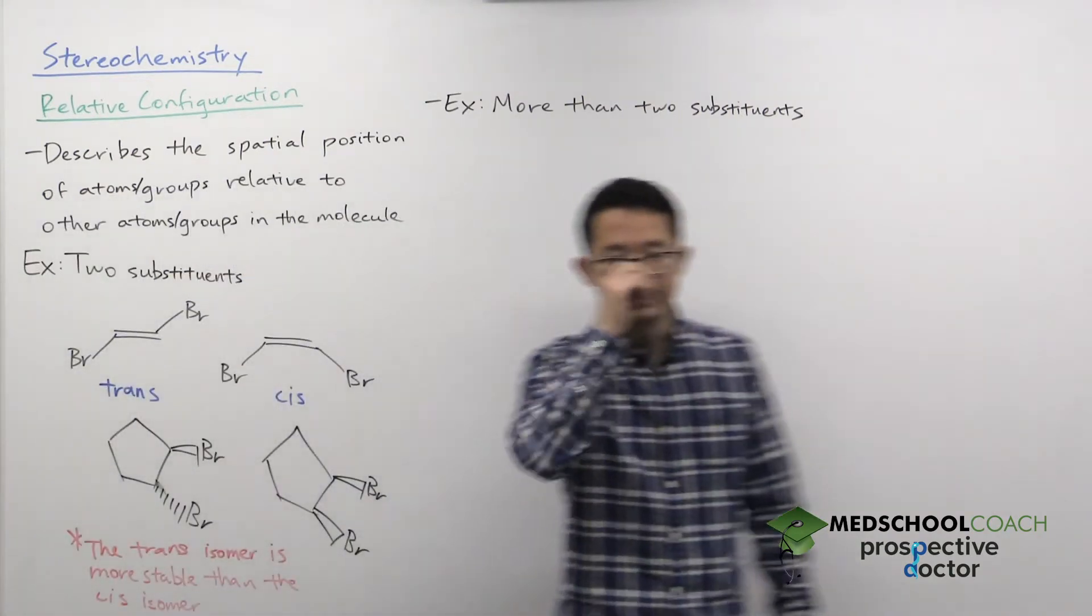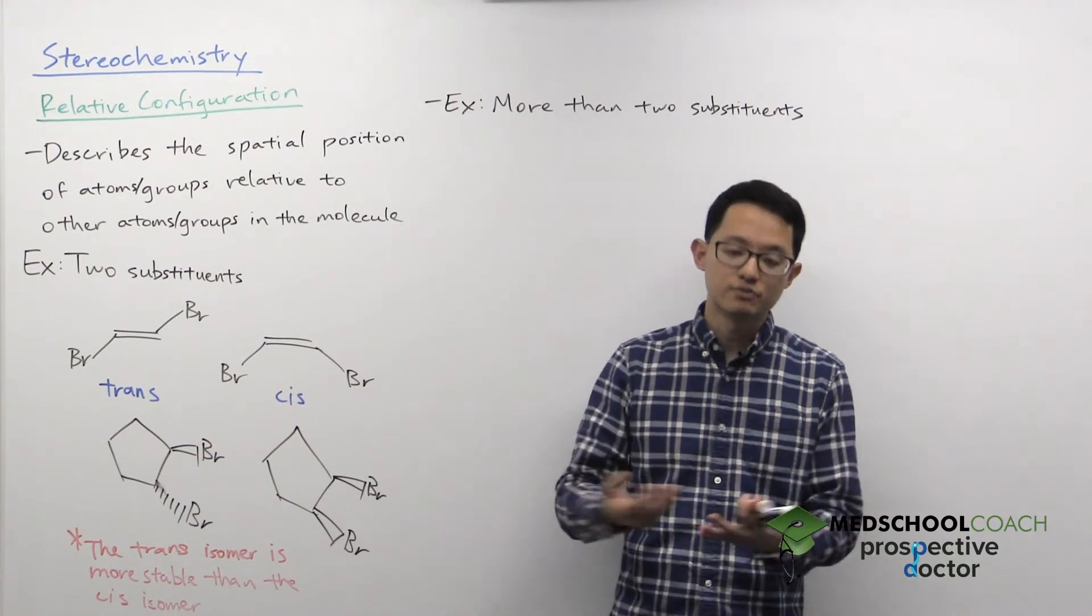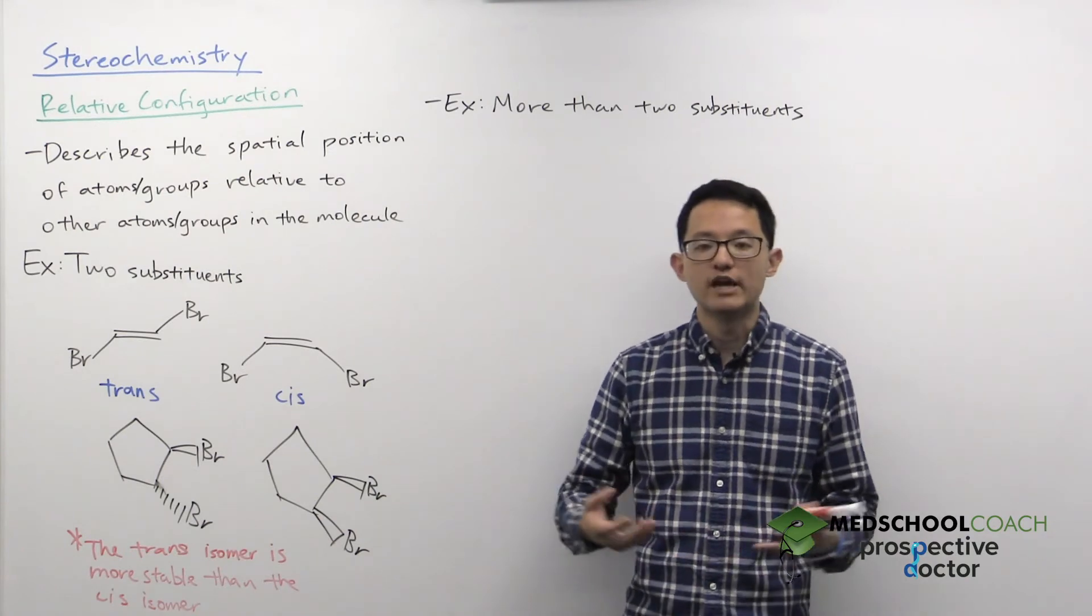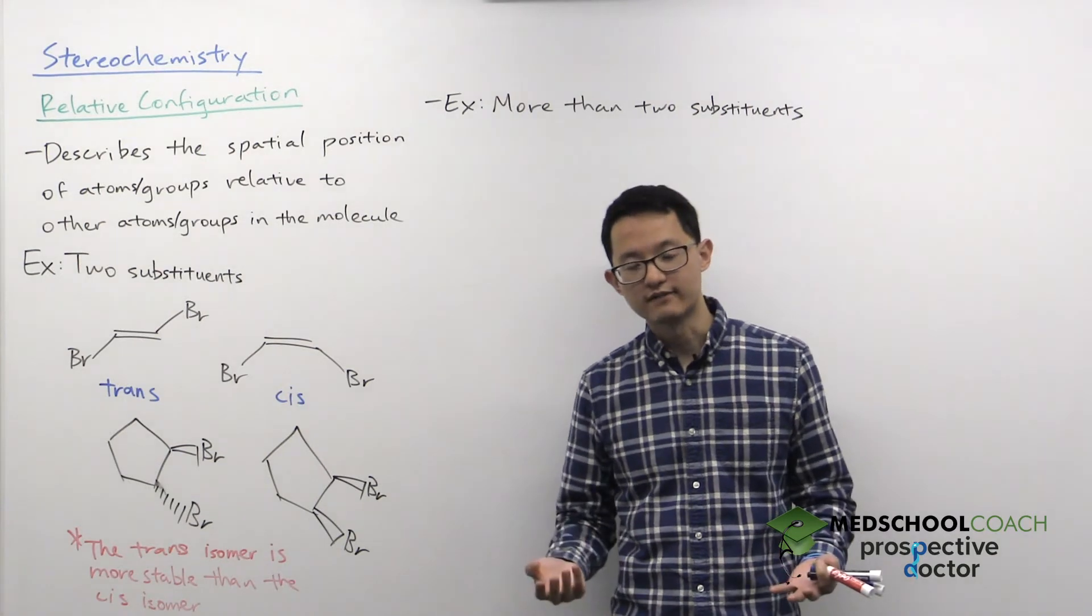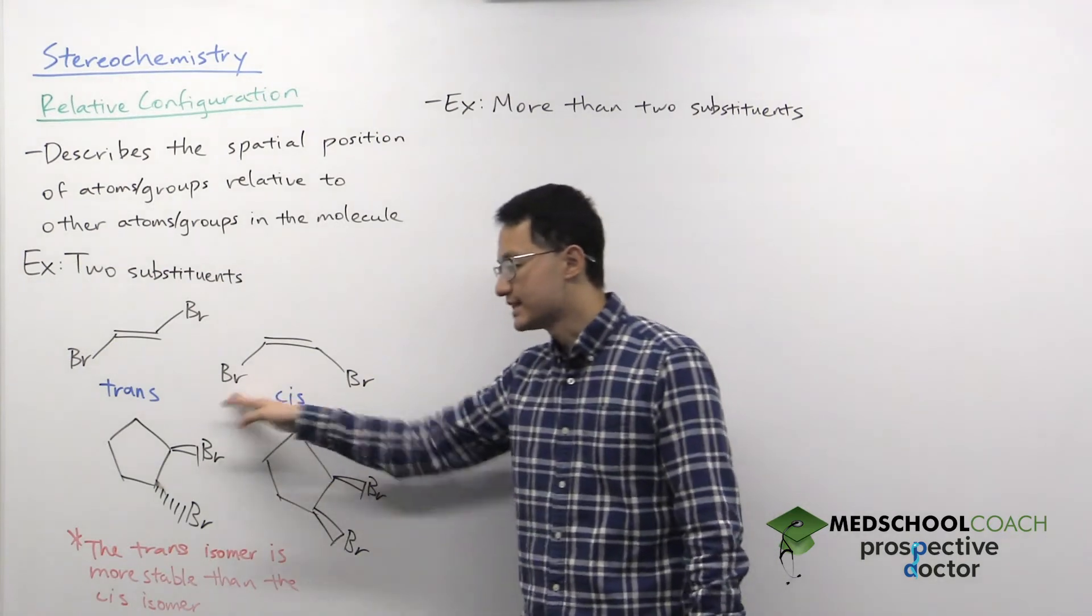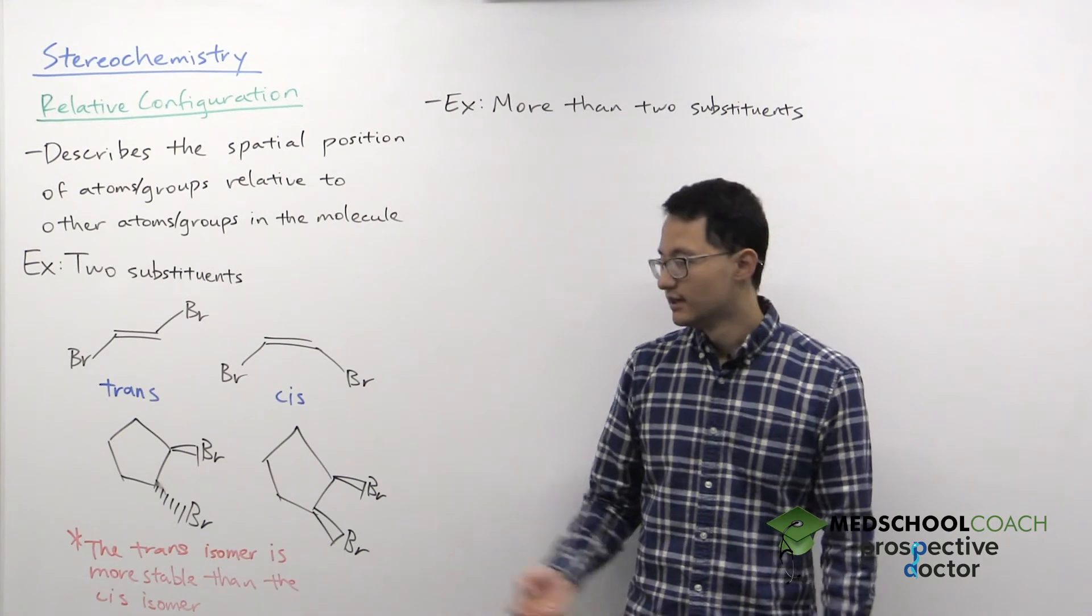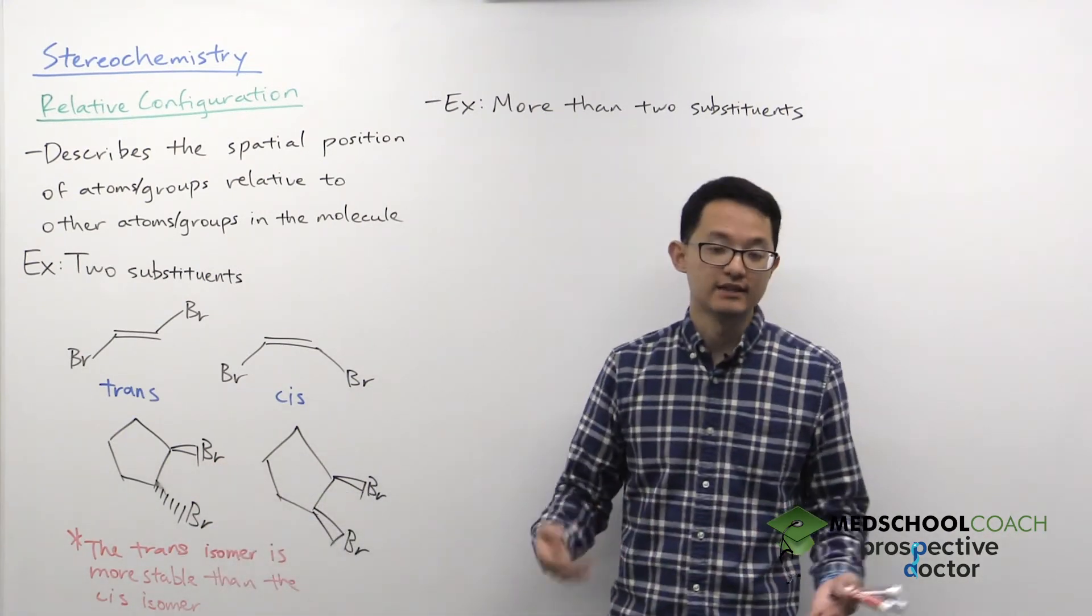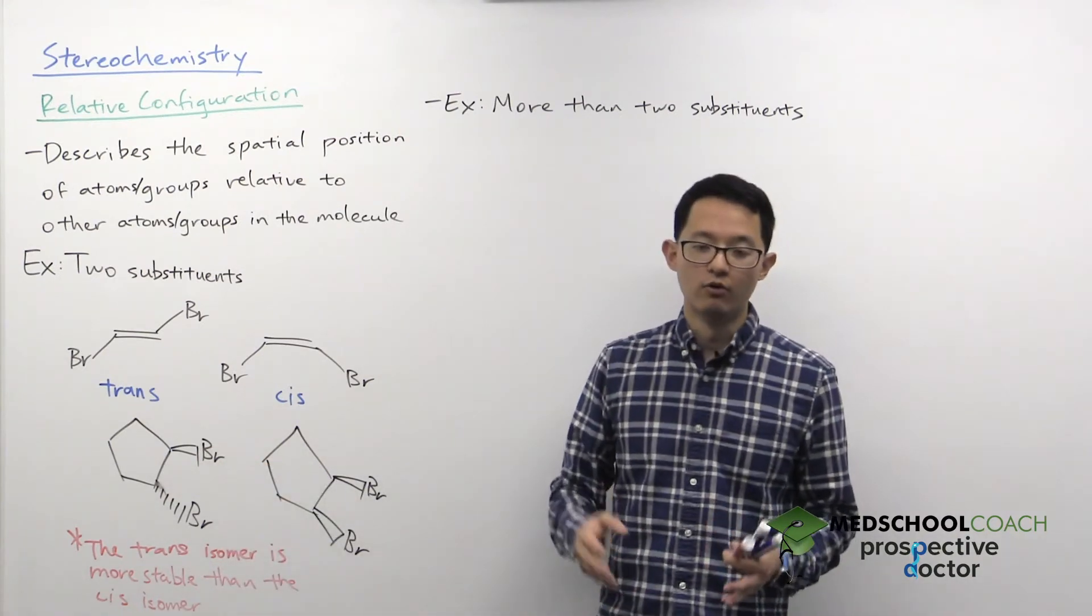And that's because the trans isomer is less likely to experience steric interactions. So if you recall, steric interactions refers to groups that come in close proximity to each other. When that happens, their electron clouds may overlap, which is an unfavorable interaction, because all electrons are negative, so they repel each other. When you have the groups that are cis or on the same side, they're closer to each other and more likely to interact. Whereas if they're trans, they're on opposite sides and less likely to interact. So if they don't have those steric interactions, they're going to be more stable.